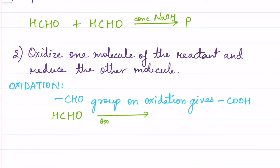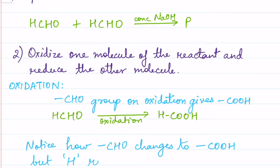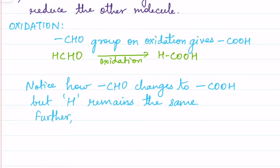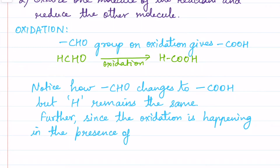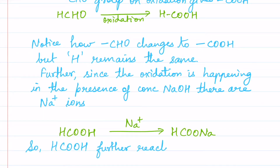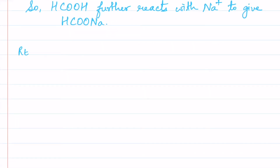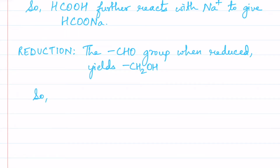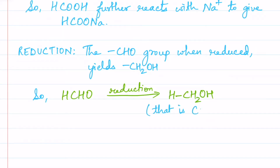When CHO oxidizes you get COOH, so when HCHO oxidizes you get HCOOH — H remains the same, only the functional group changes from aldehyde to acid, from CHO to COOH. Now because this is happening in the presence of NaOH and there are Na⁺ ions present in the reaction, HCOOH reacts with these Na⁺ ions and forms HCOONa. That is our product from oxidation.